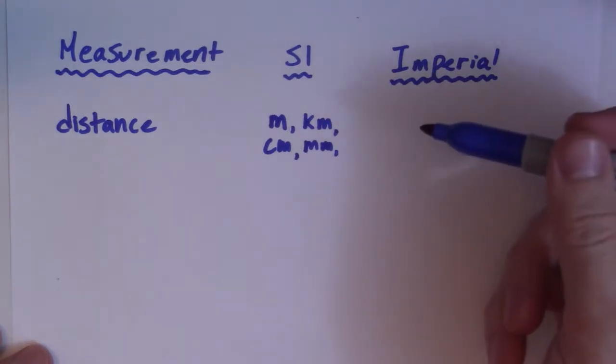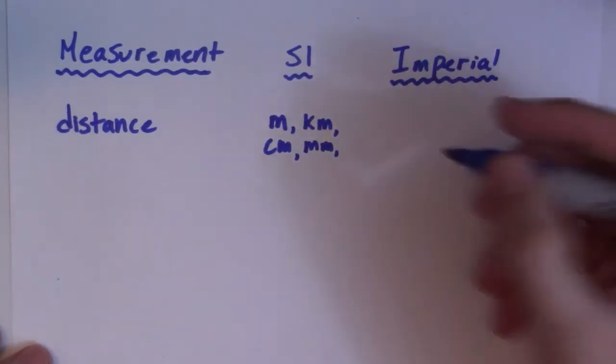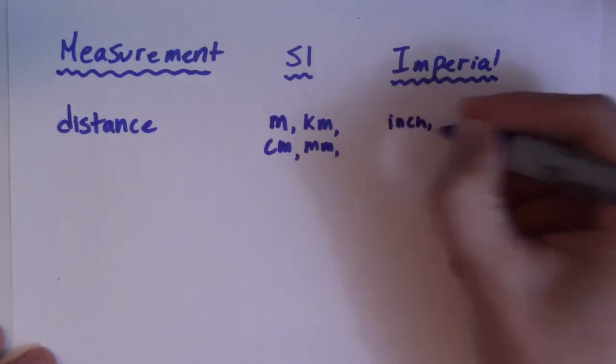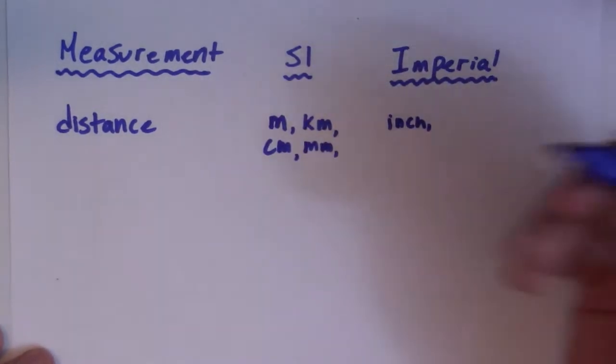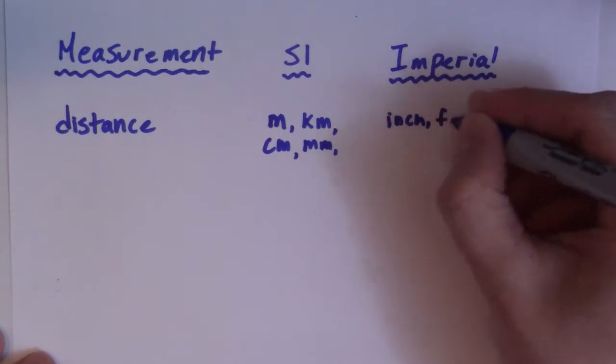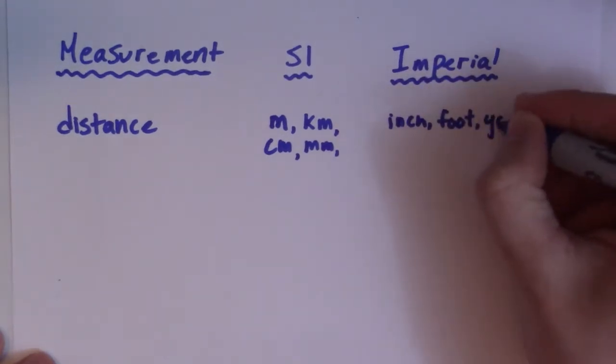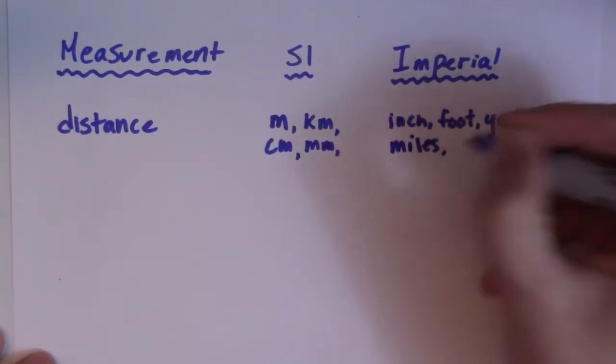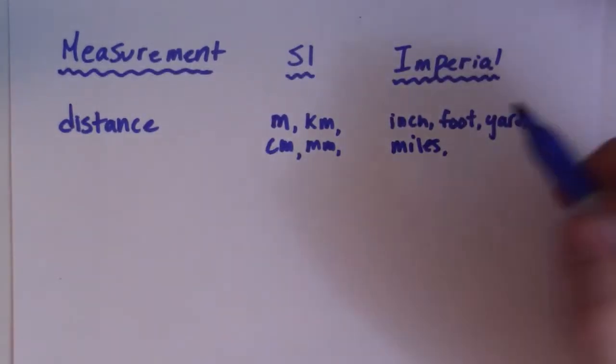Now in Imperial, there are a bunch of other units that we have. Probably the most common one you would know right away would be an inch. Then we have foot. After that we have a yard, and then we have miles.